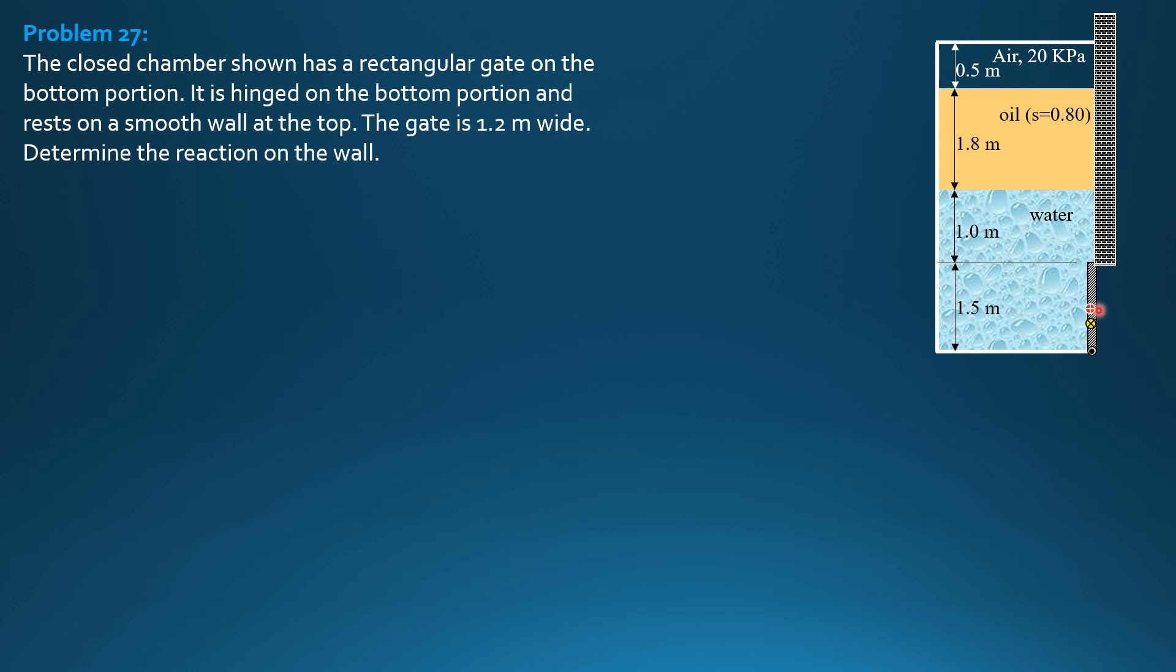So centroid is half of 1.5, 0.75 meter from the bottom. And the center of pressure, therefore, distance from the centroid is E sub V. Therefore F acts at the center of pressure. This is the reaction at the wall, FW.